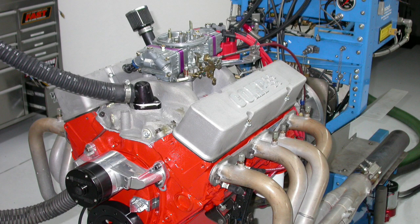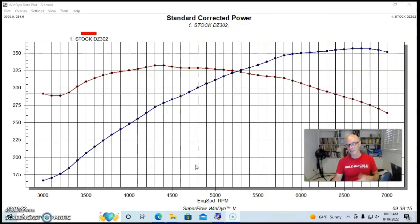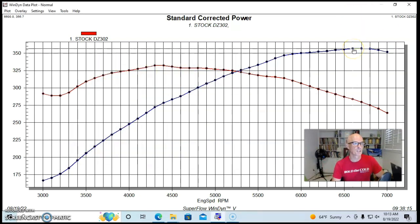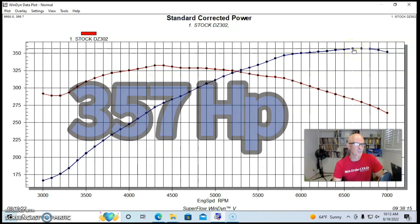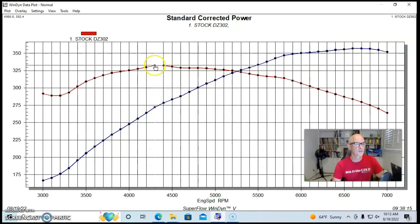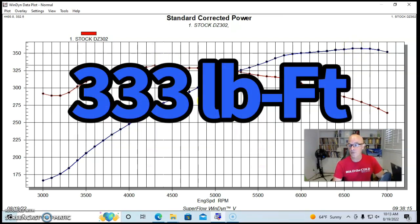I just want to start out with a baseline because we did run a stock DZ302, four inch bore, three inch stroke, fueling heads, Duntoff cam, dual plane intake manifold. And with headers and such, this combination produced 357 horsepower and 333 foot pounds of torque.